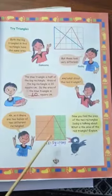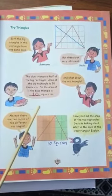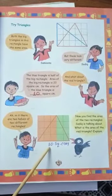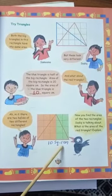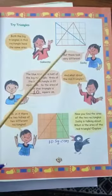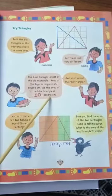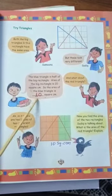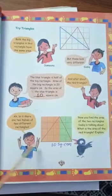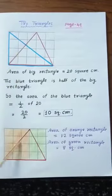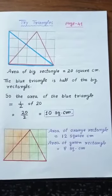Children, we found that the area of the blue triangle is 10 square centimetres, and the area of the red triangle is also 10 square centimetres. So Samina is right — it looks different but the area is the same. We can say the area of both triangles is the same: 10 square centimetres. Also write 10 in your textbook and write all these things in your maths notebook.